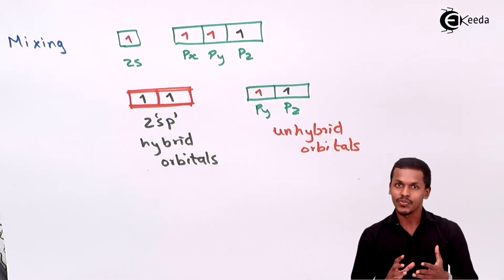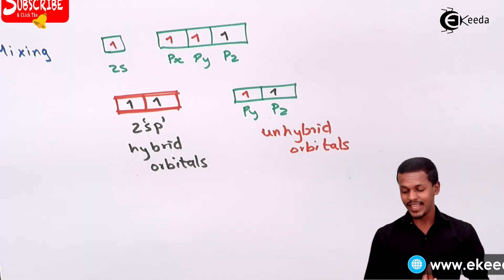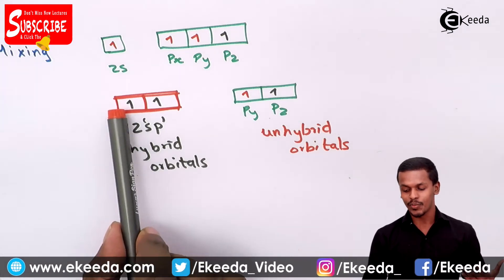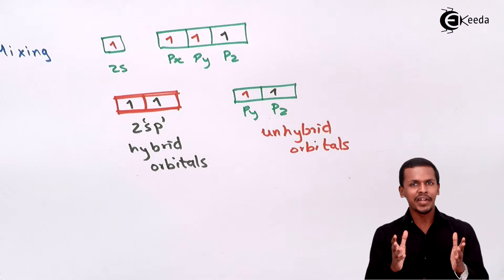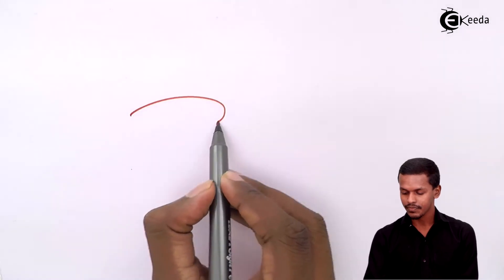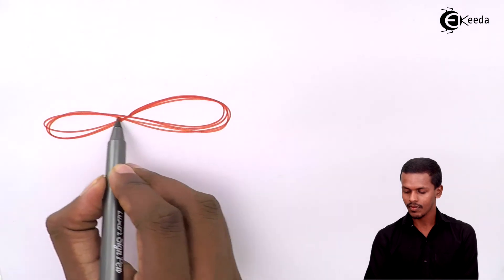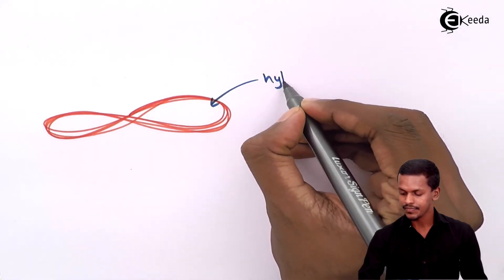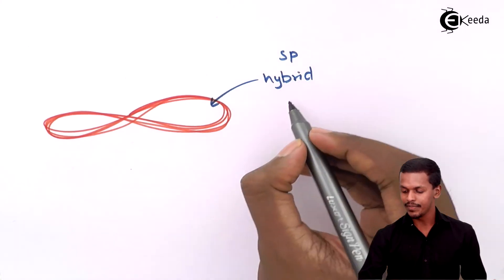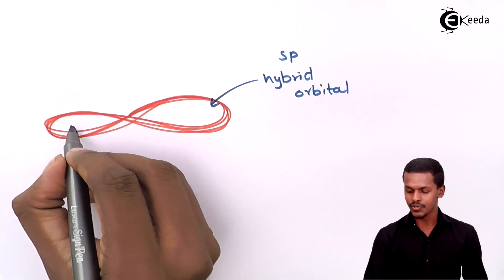We now have two SP hybrid orbitals — this is one SP hybrid orbital and this is also an SP hybrid orbital — and two unhybrid p orbitals. What is the orientation and structure of these? Since we have two SP hybrid orbitals, we get a structure in this manner. These are the two SP hybrid orbitals, and similarly this one is also an SP hybrid orbital.